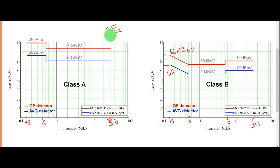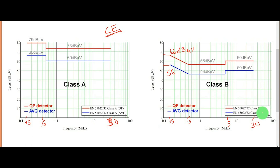You can see this is the limit line of conducted emission. Conducted emission is also known as CE — you can find it referred to as conducted emission or just CE. As per standard, this is the standard for the European market. In Europe, they follow EN 55022-32 Class A for conducted emission, and EN 55022-32 Class A average. Sometimes people also follow the IEC standard or the CISPR standard like CISPR 22 and CISPR 14.